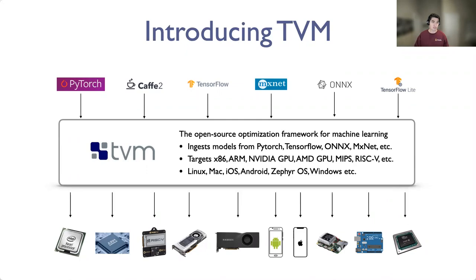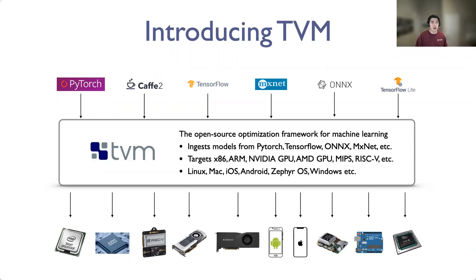TVM is an open source optimization framework for machine learning that provides a solution to this problem. It can ingest models from varied sources including PyTorch, TensorFlow, ONNX, and MXNet, and target a wide array of hardware backends: x86 server CPUs, ARM CPUs and microcontrollers, NVIDIA GPUs, AMD GPUs, different ISAs, and accelerators. It supports different software environments including operating systems, real-time operating systems, and bare metal microcontroller systems, all of which enforce different constraints for ML deployment.